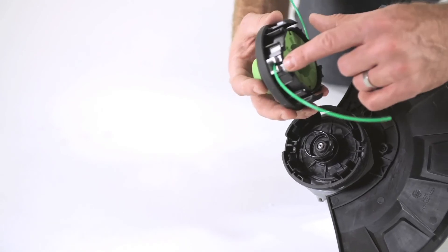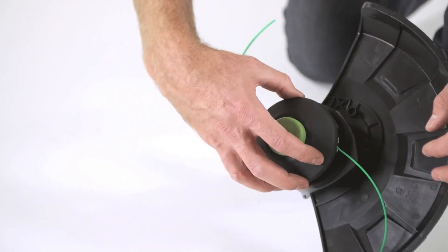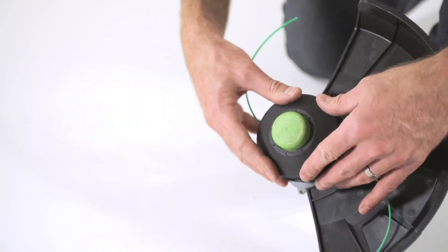With the spool base facing down, align the tabs on the spool retainer for the slots on the spool base and press the retainer down evenly until it snaps into place.